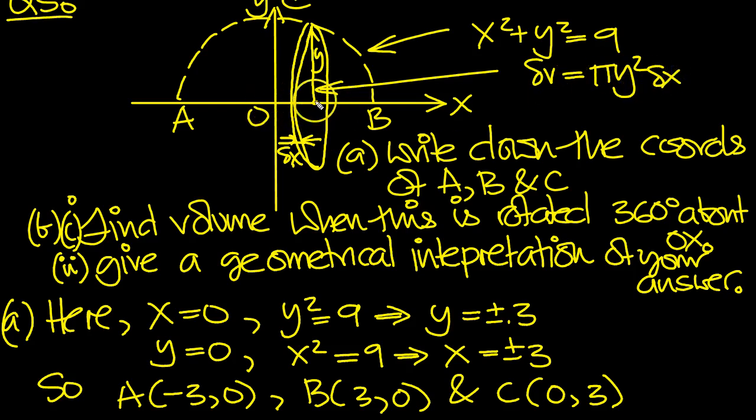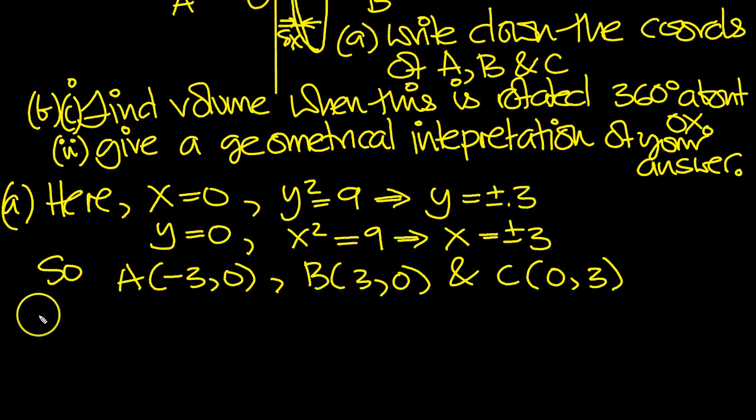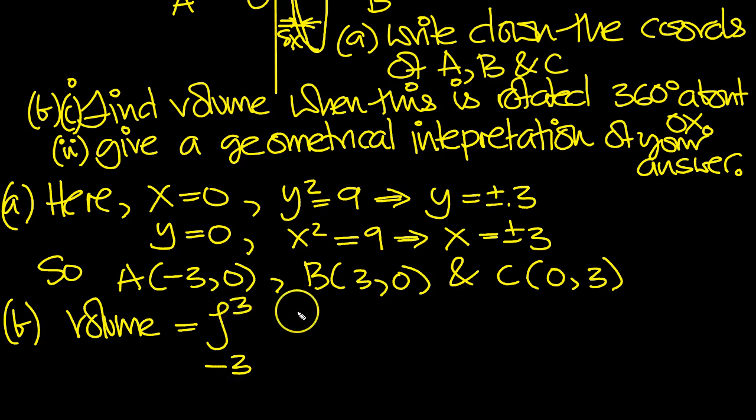We want to sum this volume between this x value at 3 and this x value at -3. So the volume, this is part B. Volume is equal to the integral between x is -3 and 3 of πy² dx. Remember, πy² dx is the actual volume.